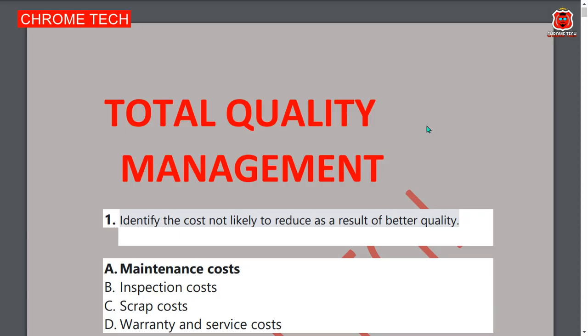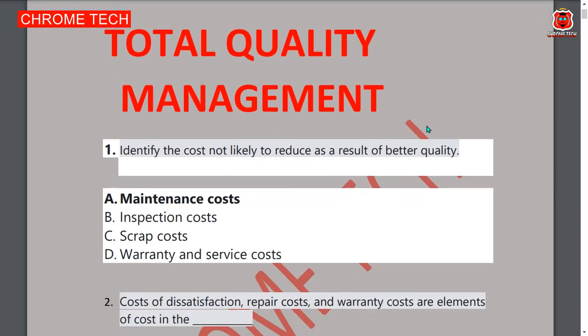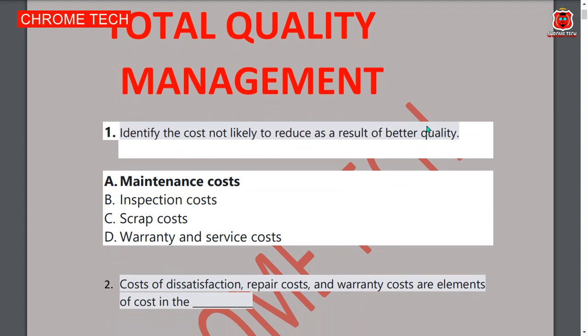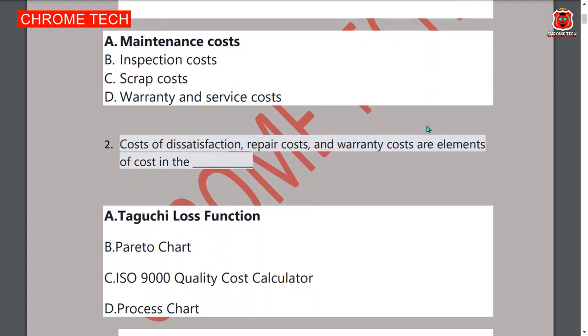Hello everyone. Total Quality Management important multiple choice questions with answers. First question: identify the cost not likely to reduce as a result of better quality. Answer: maintenance costs. Second question: cost of dissatisfaction, repair cost, and warranty cost are elements of cost in Taguchi loss function.